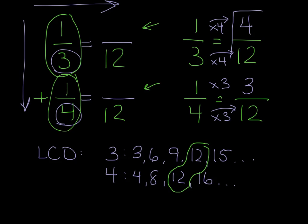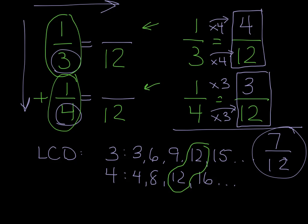Now, I have two fractions with the same denominator, which means I can just add them. And I would get 7 twelfths as my answer. And I don't need to reduce it or put it in simplest form, so it's good to go.